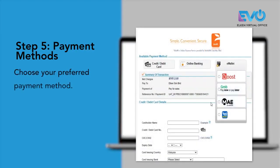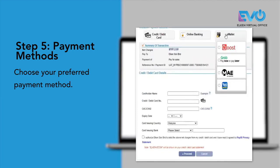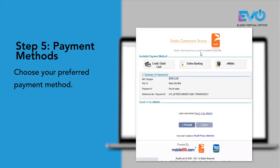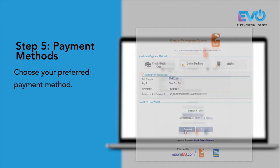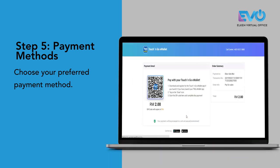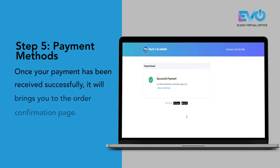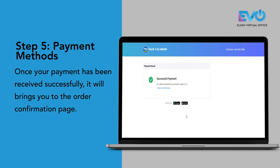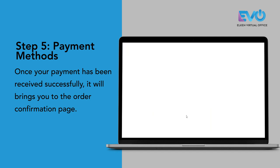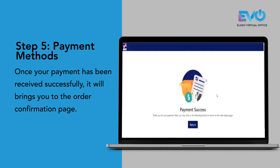Under the IP88 payment page, select the payment method that you wish to use to complete your payment. Once the payment is successful, you will be redirected back to the Evo merchant page, and it will tell you that the payment is successful.